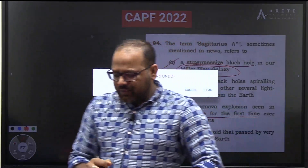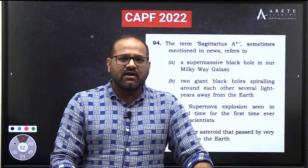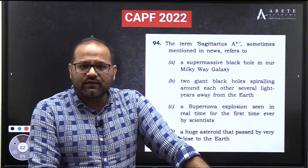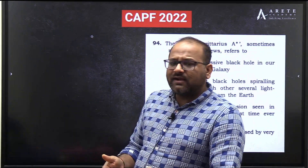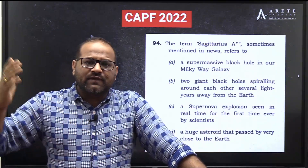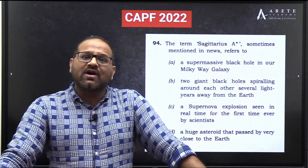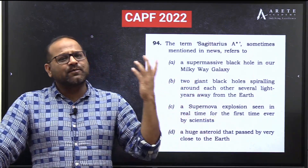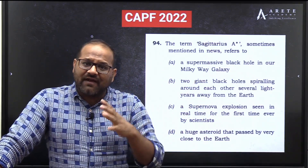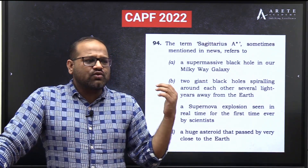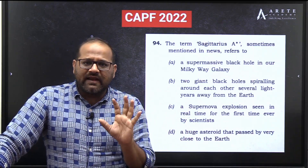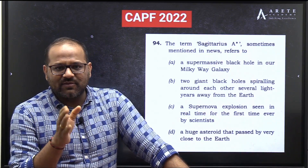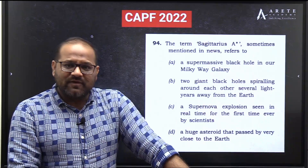The important takeaway is knowing how much depth to study. For recent discoveries and new developments, even knowing the name is sufficient. But for established concepts - like expansion of galaxies, the Kuiper Belt, atmospheric layers, outer space phenomena, comets, and asteroids whose facts are well established - you need conceptual understanding. Also, do not stop covering current affairs until at least 10 days before the exam.